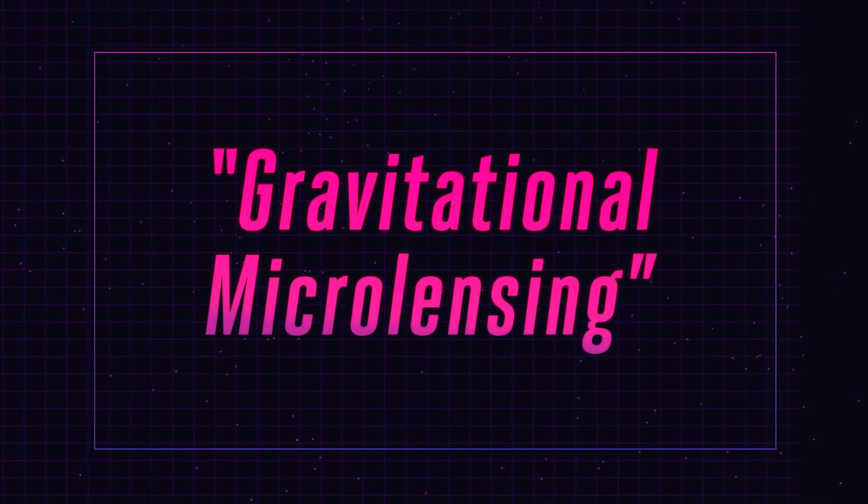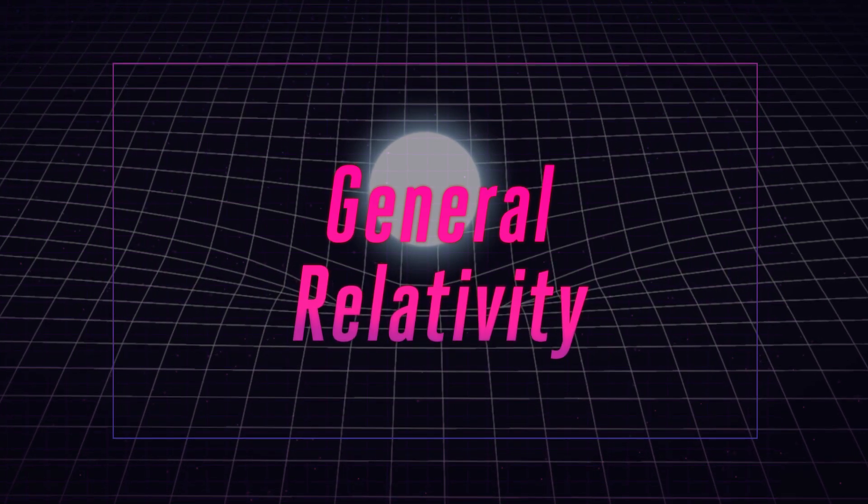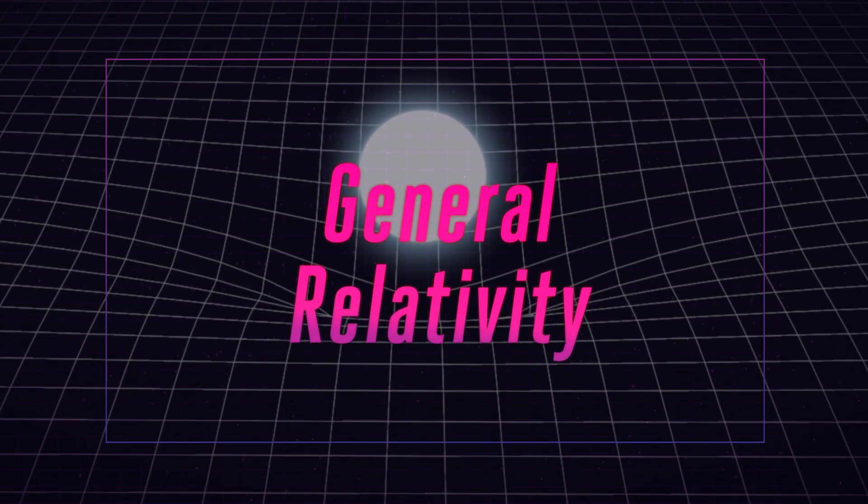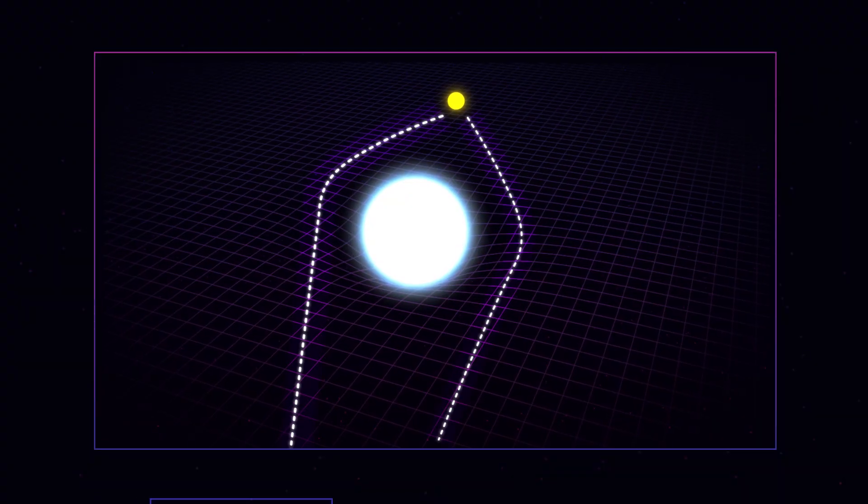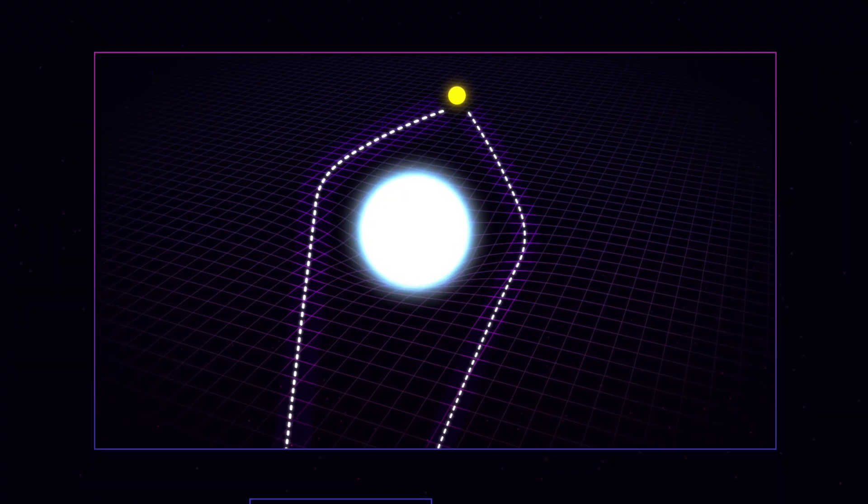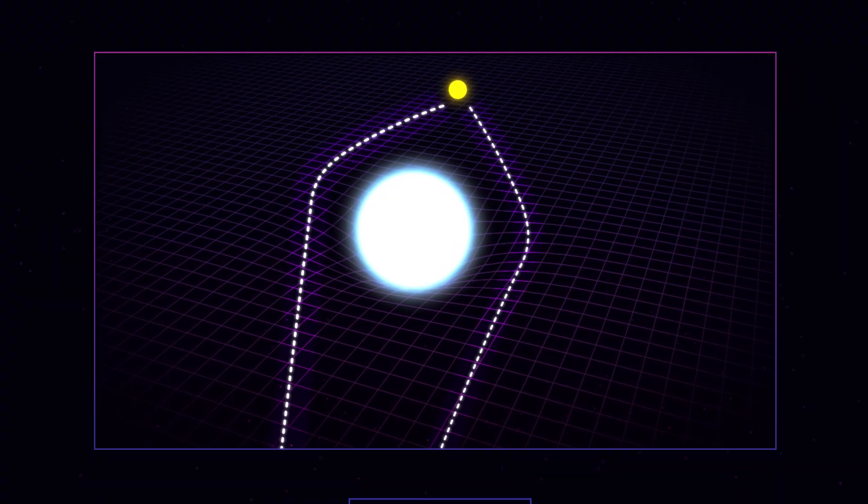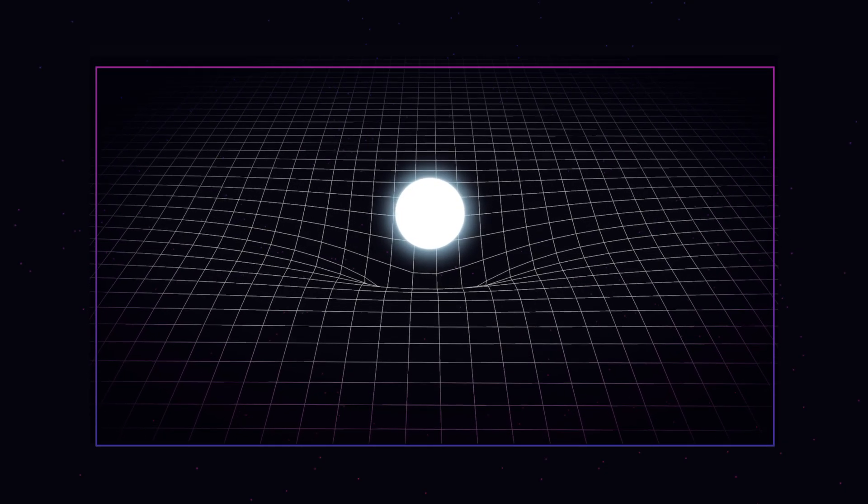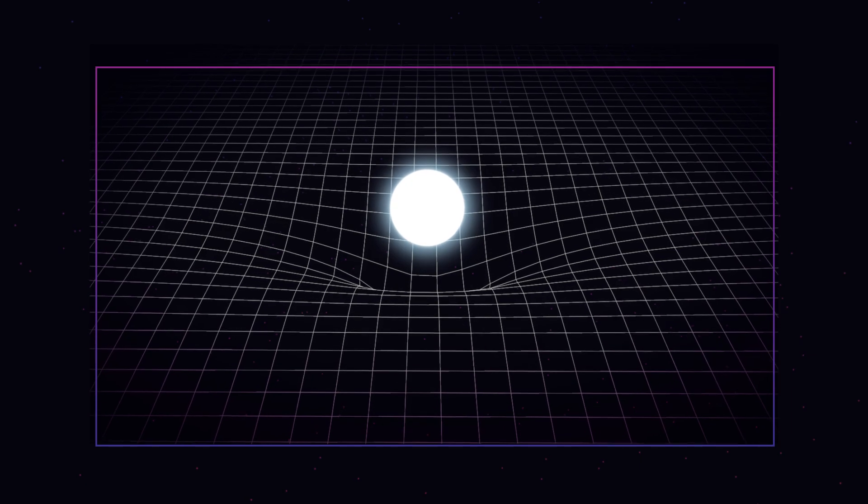Gravitational microlensing was first predicted as part of Einstein's theory of general relativity, and it works exactly like it sounds. It's gravity acting like a lens to manipulate the light of objects. Basically, supermassive objects such as stars and black holes actually warp space and time around them, and this warped spacetime can then act like a magnifying glass.